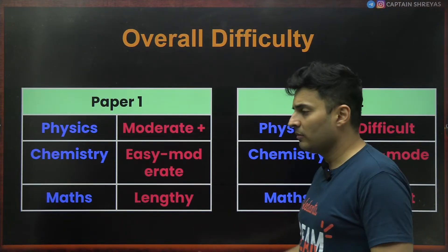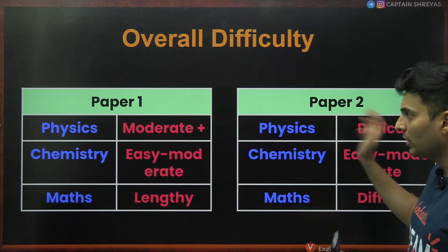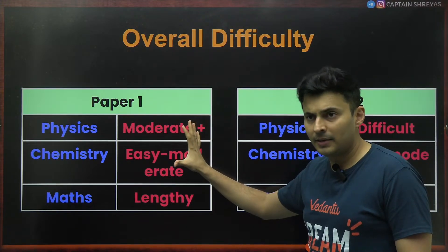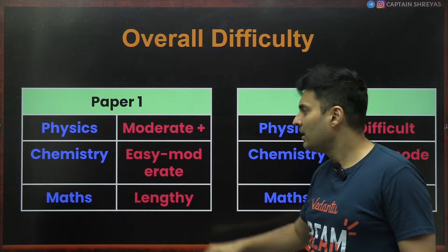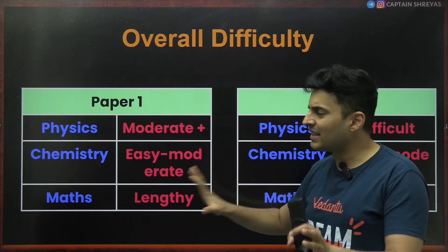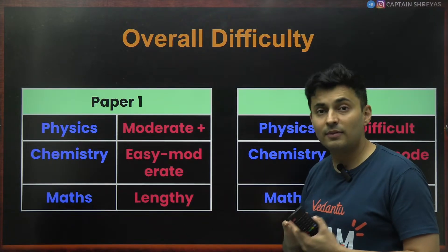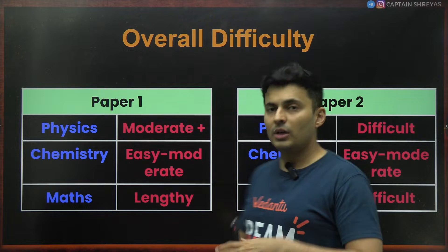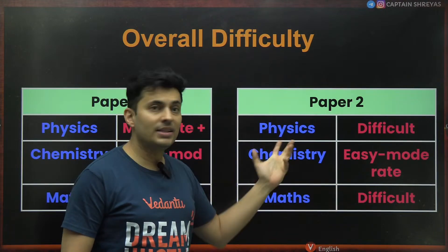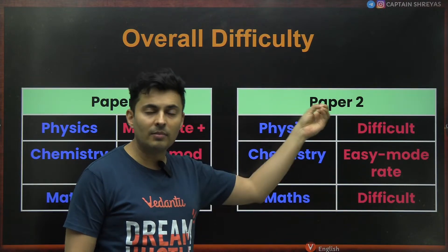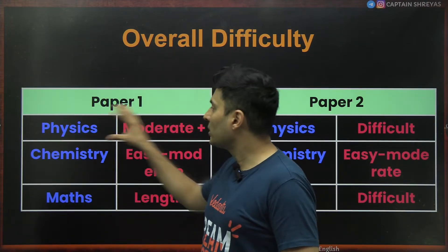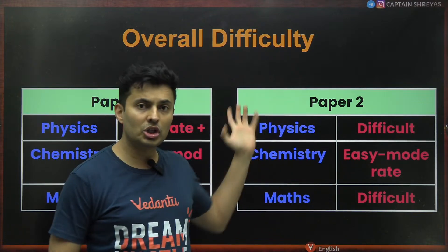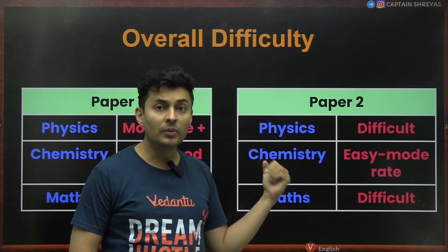Comparing Paper 1 versus Paper 2: Physics was moderate to moderate-plus, Chemistry was easy to moderate, and Maths was very lengthy — especially Paper 1. In Paper 2, Physics suddenly became difficult. Students who thought the paper was manageable were in for a shocker the moment they went for Paper 2.